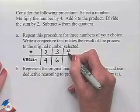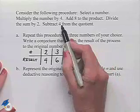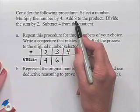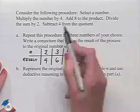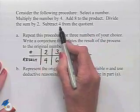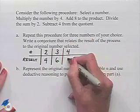And just another number. We'll just choose 4. Multiply by 4 gives us 16. Add 8. 16 plus 8 is 24. Divide by 2. 24 divided by 2 is 12. And subtract 4. 12 minus 4 is 8.